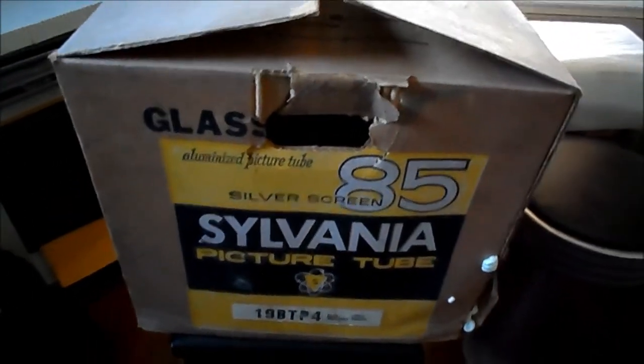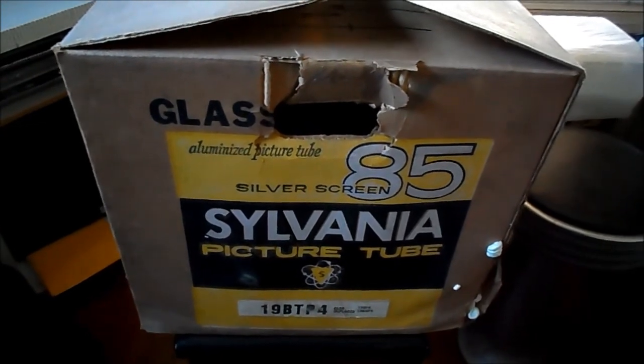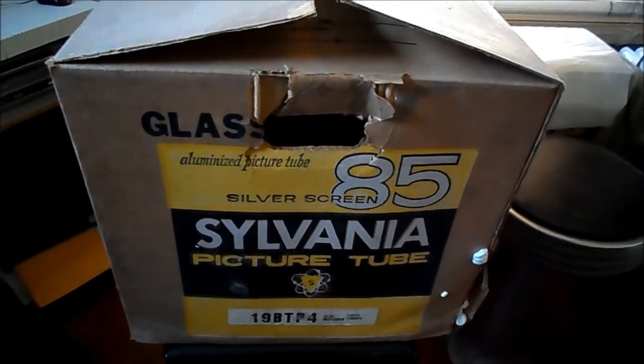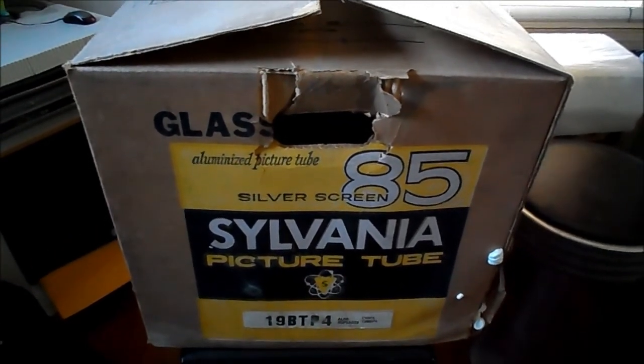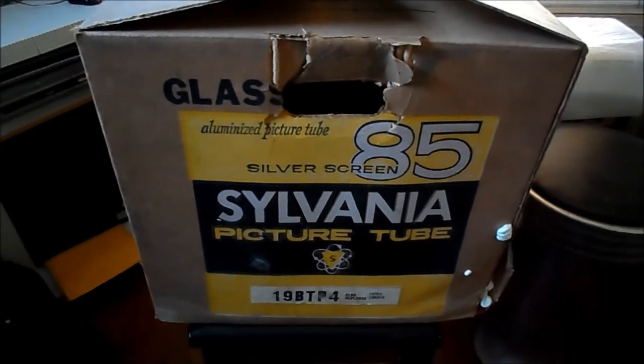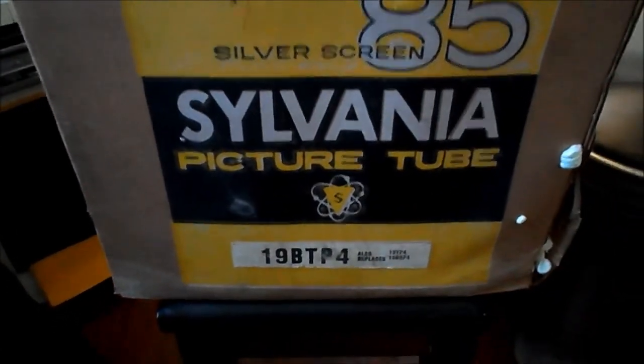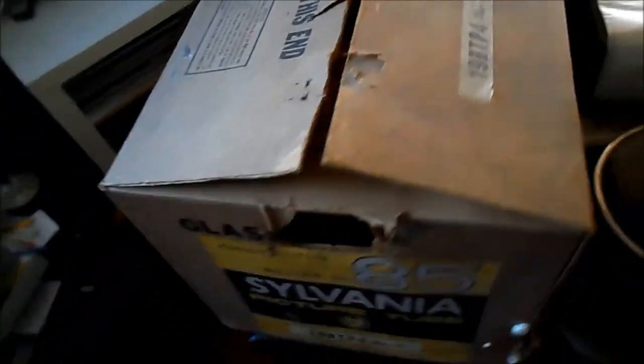This arrived in the mail the other day. This is the replacement CRT for the Magnavox. As soon as we get sound and have to take the cabinet out to clean it anyway, we might as well put this one in. This is a 19 BTP4, and this is new old stock. It came from the early television organization museum. It was fairly reasonably priced, new old stock CRT, been tested, and we'll install that so we'll have a fine picture on the Magnavox.